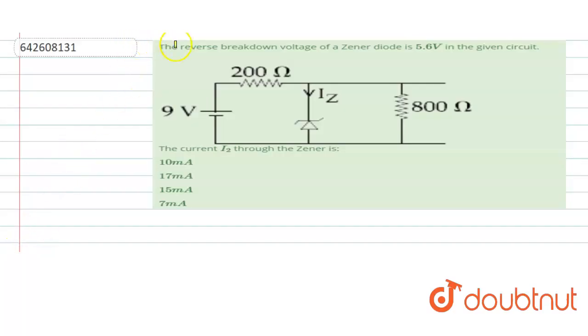Hello, the problem states that the reverse breakdown voltage of a Zener diode is 5.6 V in the given circuit.